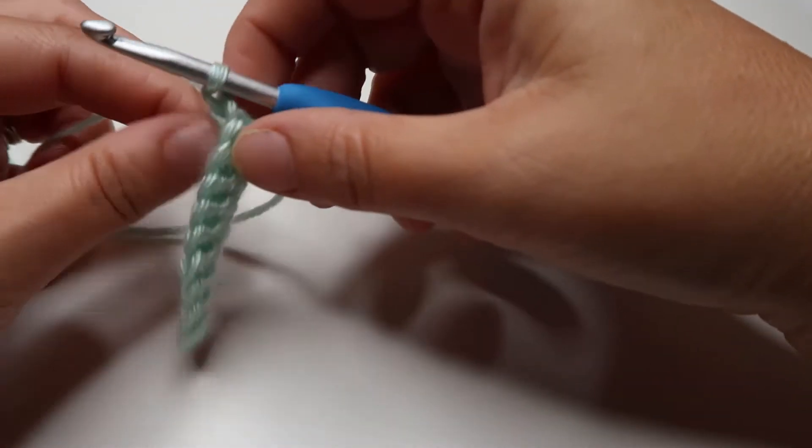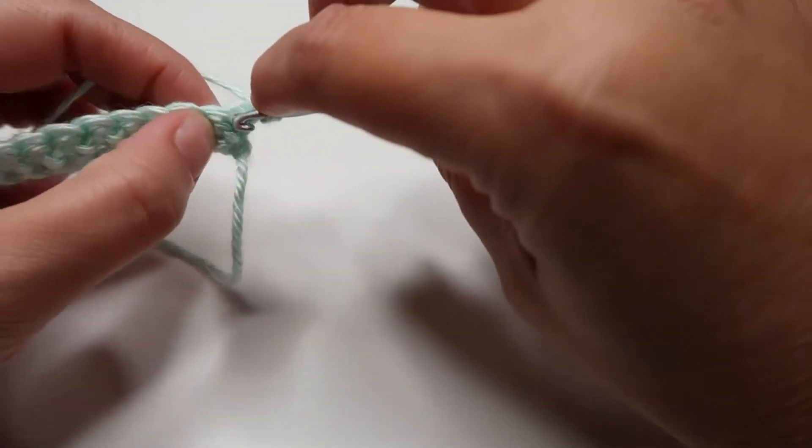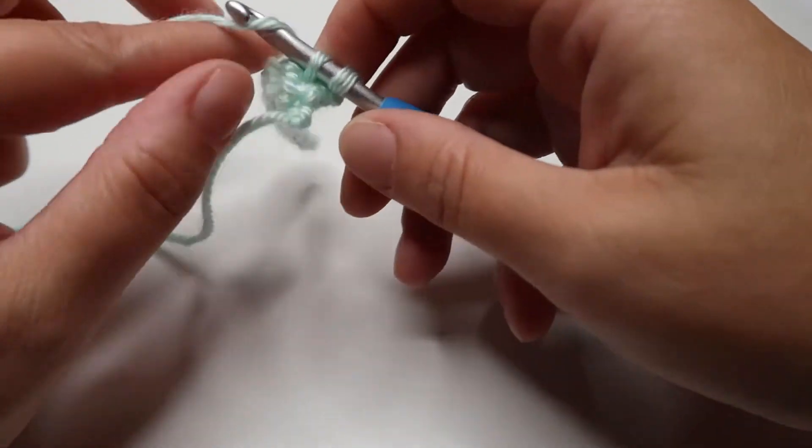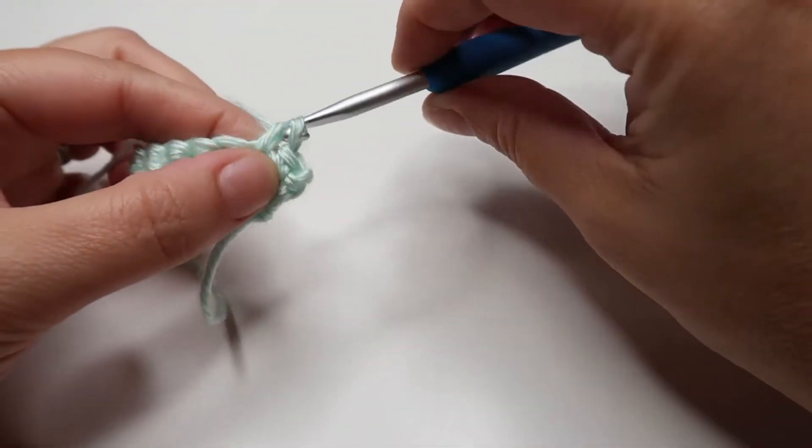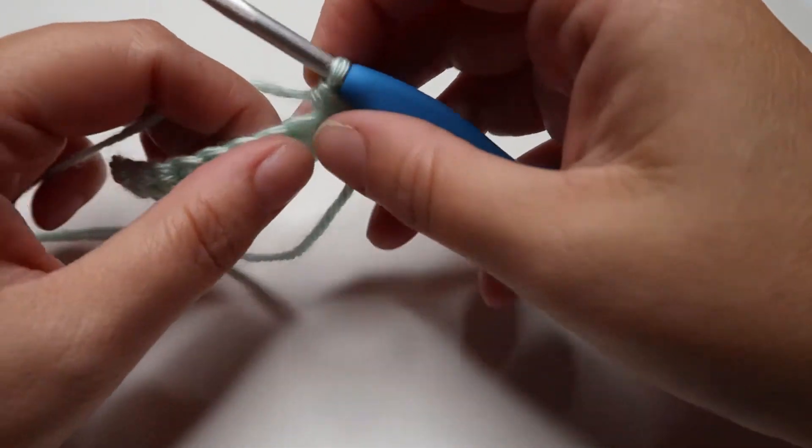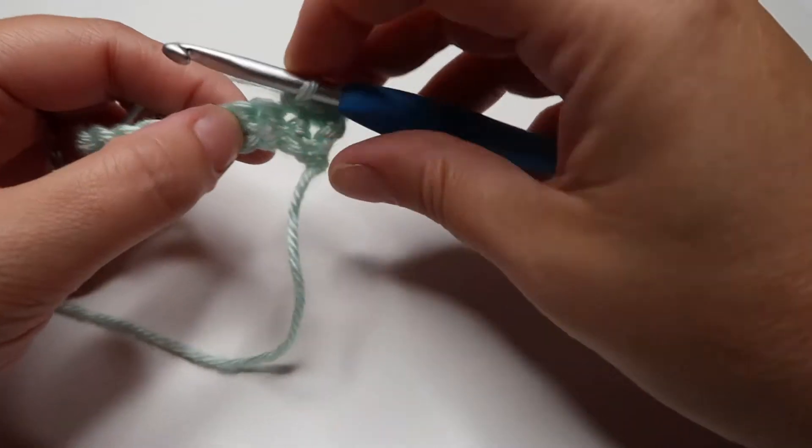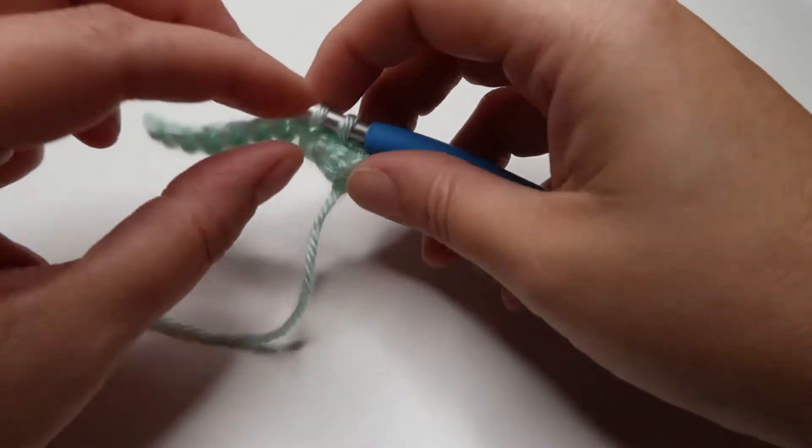So I'm going to chain one, turn to start my next row. I'm going to do one single crochet. I'll do two single crochets normally. And then I'll say that the pattern calls for two in the next stitch. So you just do two single crochets in the next stitch.